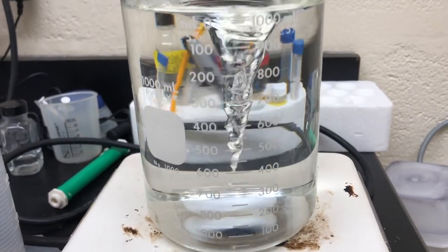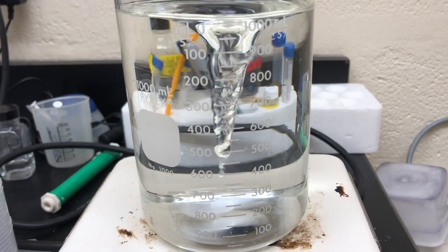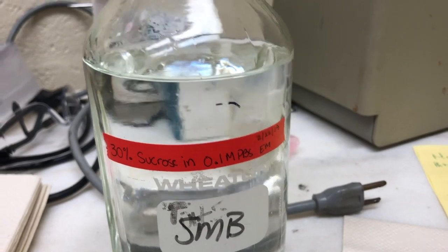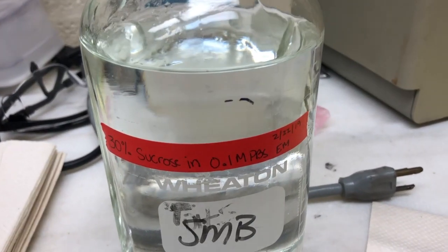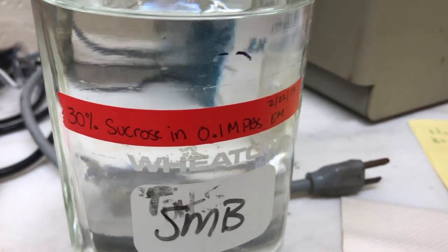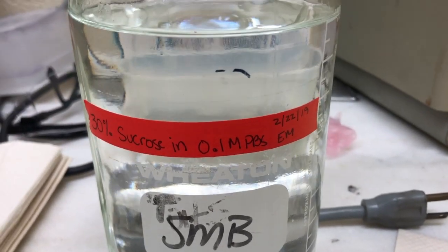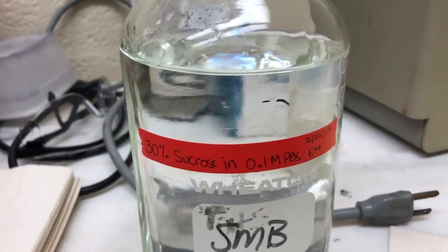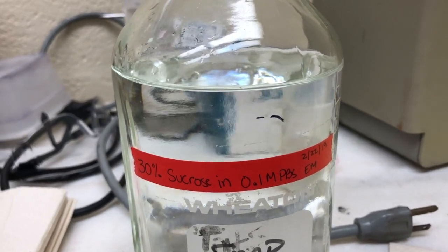Once everything has dissolved, make sure you put it in a container, a glass container, and label it with what it is. So 30% sucrose and 0.1 molar PBS with the date and your name. And thanks for watching, subscribe below, like and comment.